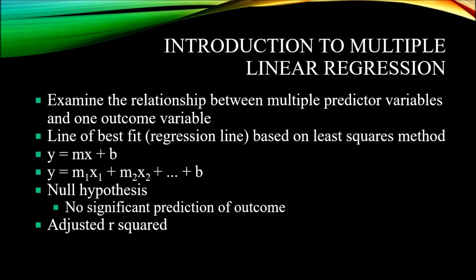The regression will produce a line of best fit — we refer to this as a regression line — based on the least squares method. We can consider the equation for a straight line as we think about the regression line: y equals mx plus b. You have the value of the y variable, the value of the x variable, m which is the slope of the line — the amount of change in the y variable for every one unit change in the x variable — and then b, the point at which the line crosses the y-axis, otherwise known as the constant.